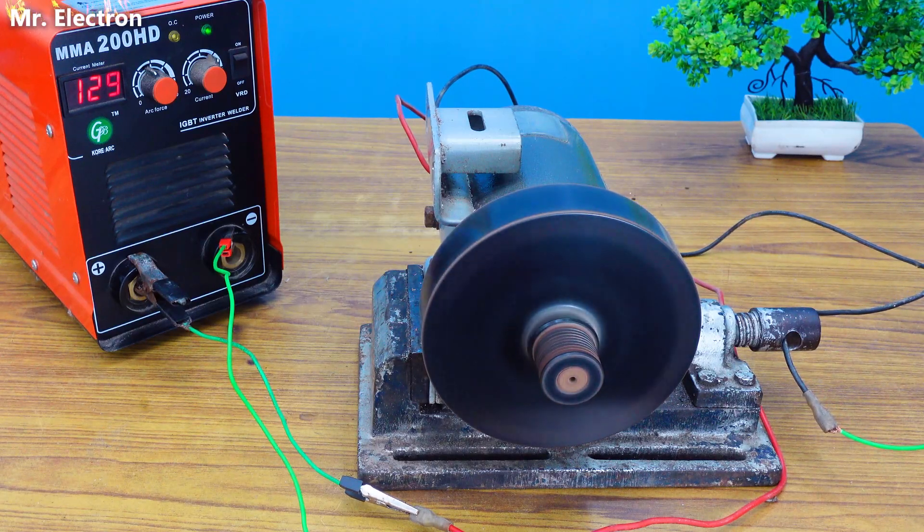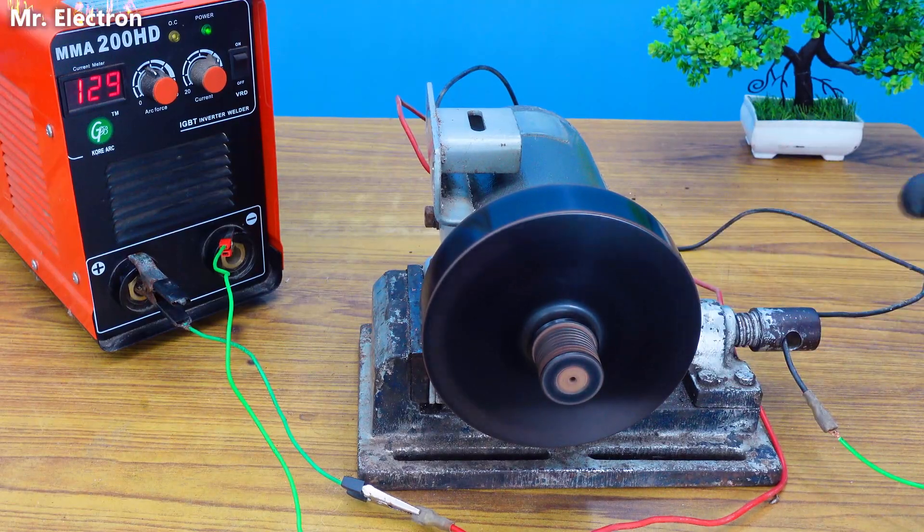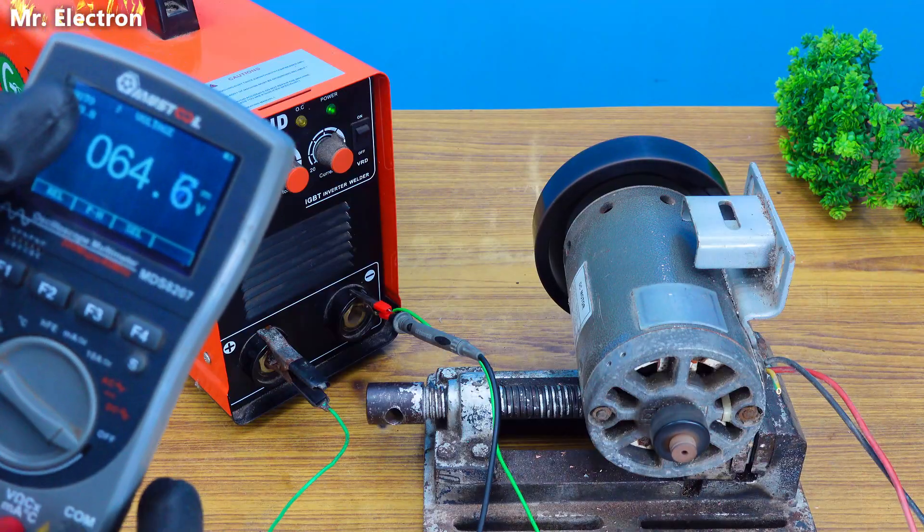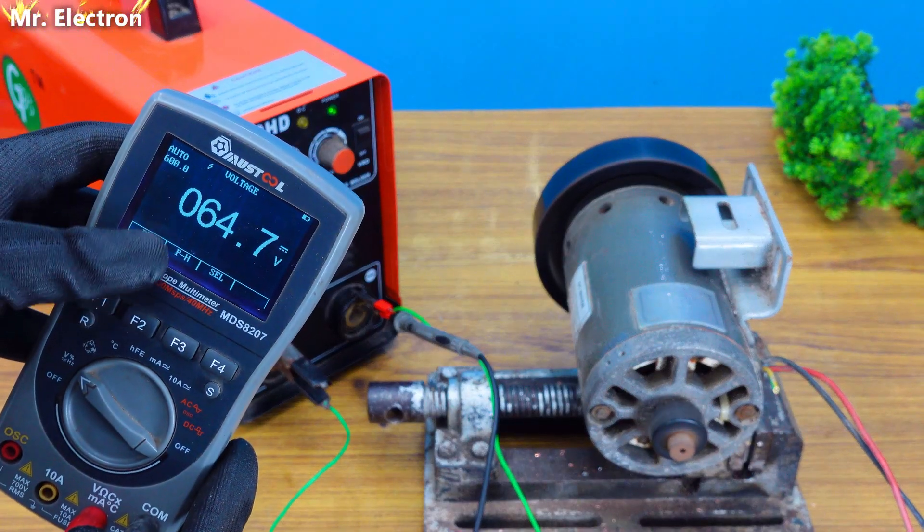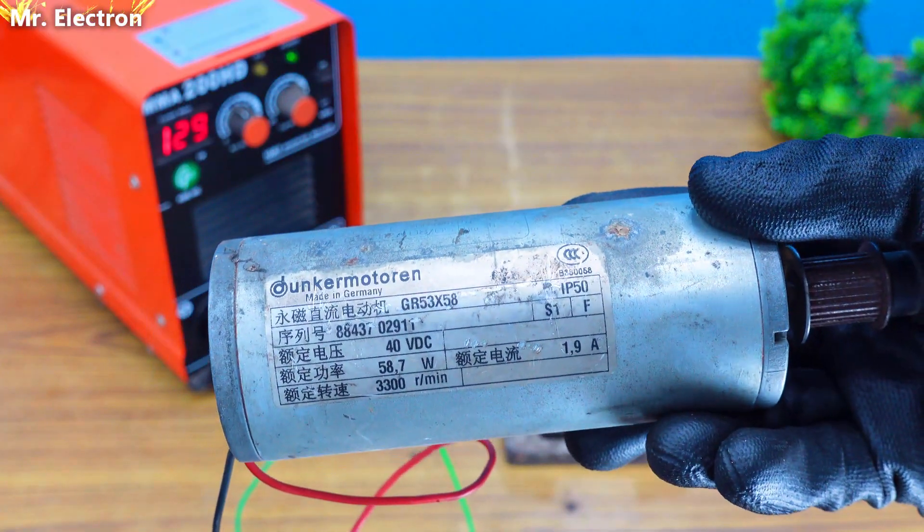Here you can see that after connecting the motor, the voltage is only 65 volts, so it has dropped. And this is a CNC motor, 40 volts DC, and this is like almost perfect for running this with the welding machine.